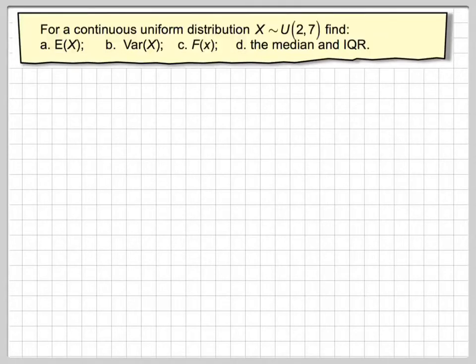Having derived some formulas now, we're now going to follow a continuous uniform distribution X belonging to U(2, 7). Find the expected value of X, the variance of X, the cumulative distribution F of X, and the median and the interquartile range.